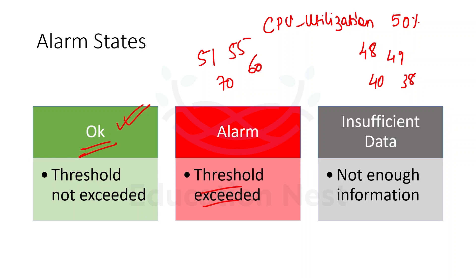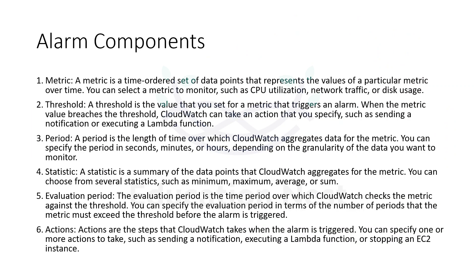So these were the three different states that one alarm can have. The next topic is different alarm components. The first alarm component is metric. A metric is a numeric or quantitative measurement of a resource or service that AWS provides. It is used to understand the health or performance of our AWS resource and to trigger alarms and notifications when certain conditions are met.